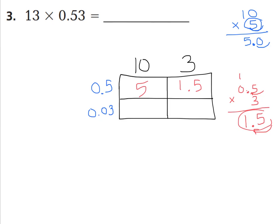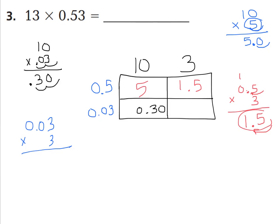Now let's come to 10 times 3 hundredths. I'll write 10 times 0.03. 3 times 0 is 0, 3 times 1 is 3. We have to have two spaces to the right of my decimal point, so the answer needs to be 30 hundredths. And for our last one: 3 hundredths times 3. 3 times 3 is 9, 3 times 0 is 0, 3 times 0 is 0 again. I need two spots to the right of my decimal, so the product should be 9 hundredths.